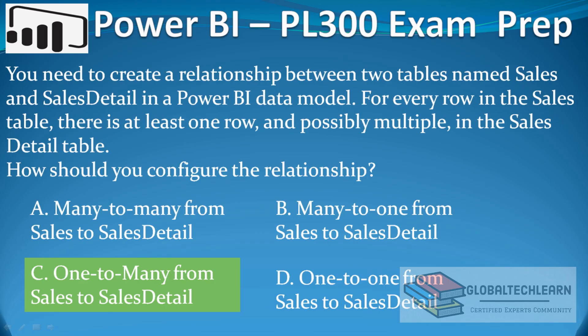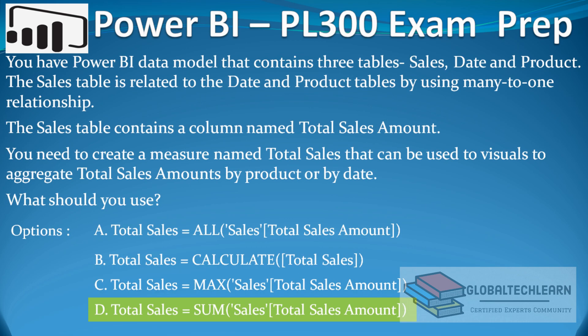Now coming back to the bonus question: we need to establish a relationship from Sales to Sales Detail, where Sales can have one row and Sales Detail can have one or more records. The answer is one-to-many — option C. If you want to see a practical example of how this one-to-many relationship is established, I will provide a link in the description. That's all for today's video — see you in the next one!